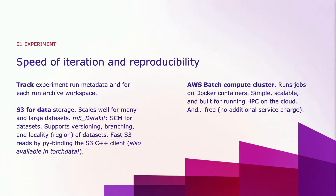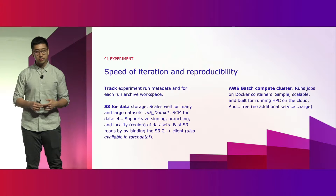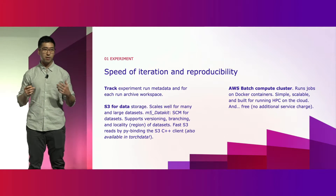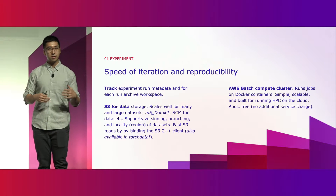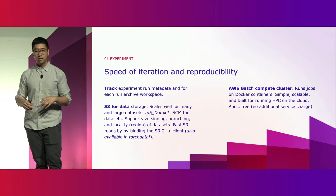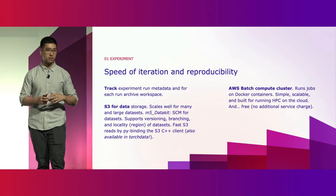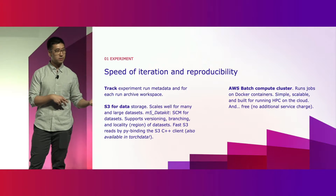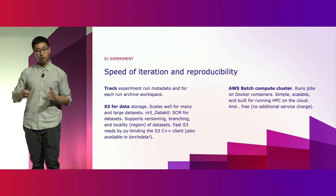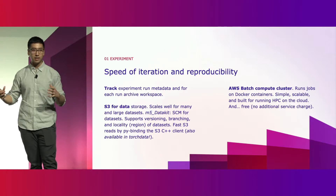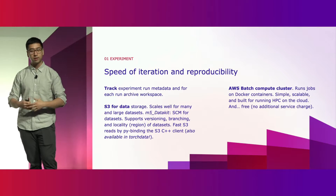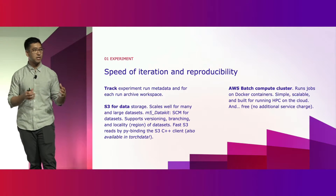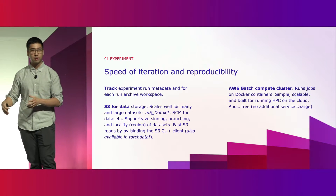The first stage is the experimentation phase, where ML engineers author training scripts and try out different model architectures, datasets, and training parameters. Speed of iteration and reproducibility are of the utmost importance here. We track all experiments and their run metadata, and archive the code workspace that goes into these experiments. This helps us refer back to previous experiments and maintain all references needed to move a successful experiment into production with high quality.